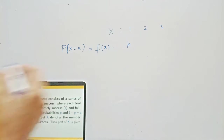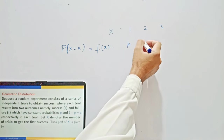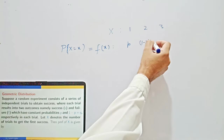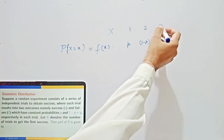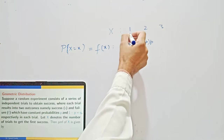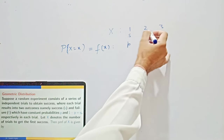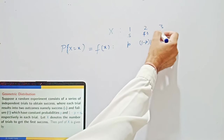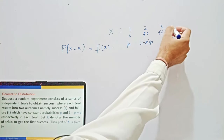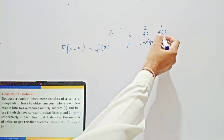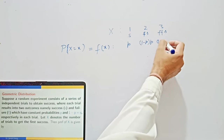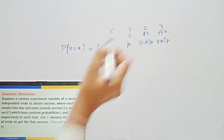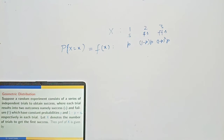The second attempt means failure in the first attempt (probability 1-P), then success. The third attempt means failure, failure, then success. The probability of this is (1-P) × (1-P) × P, which equals (1-P)² × P.